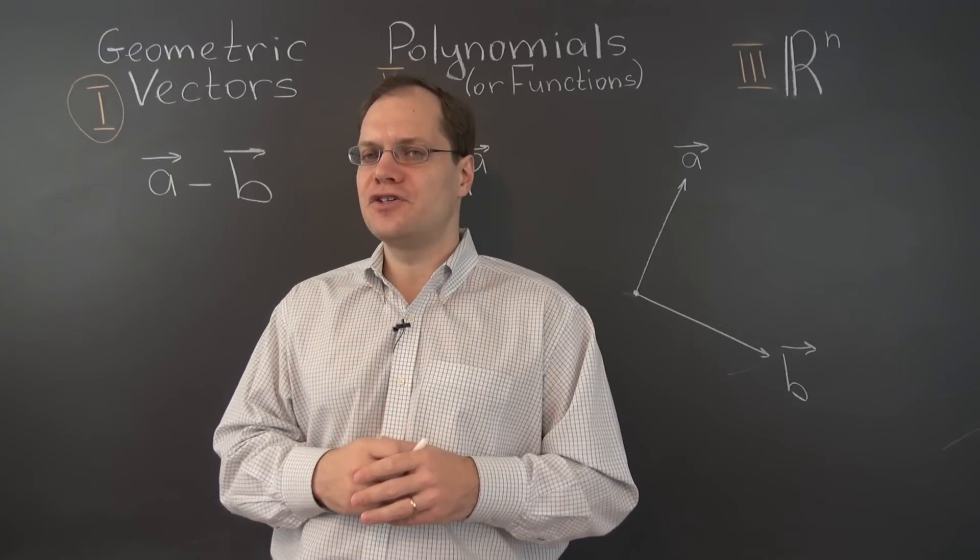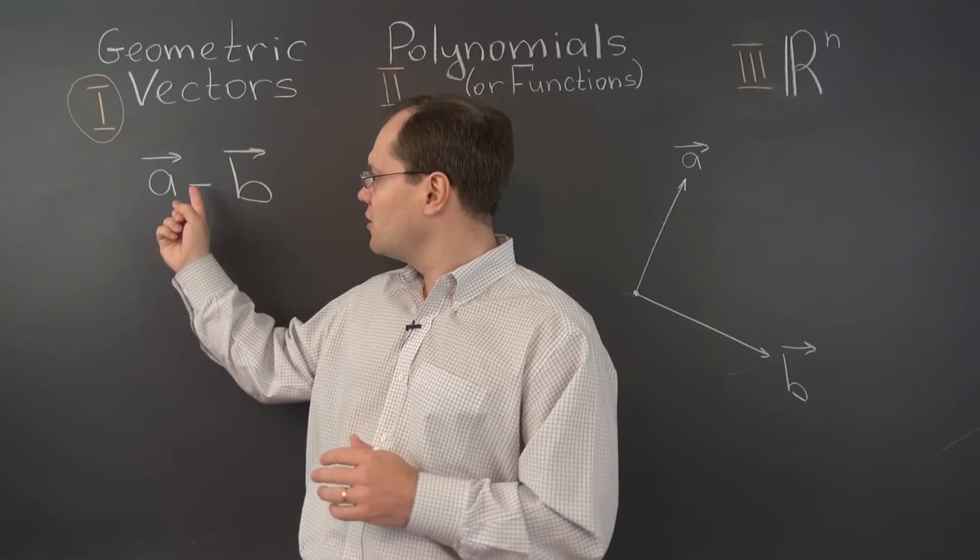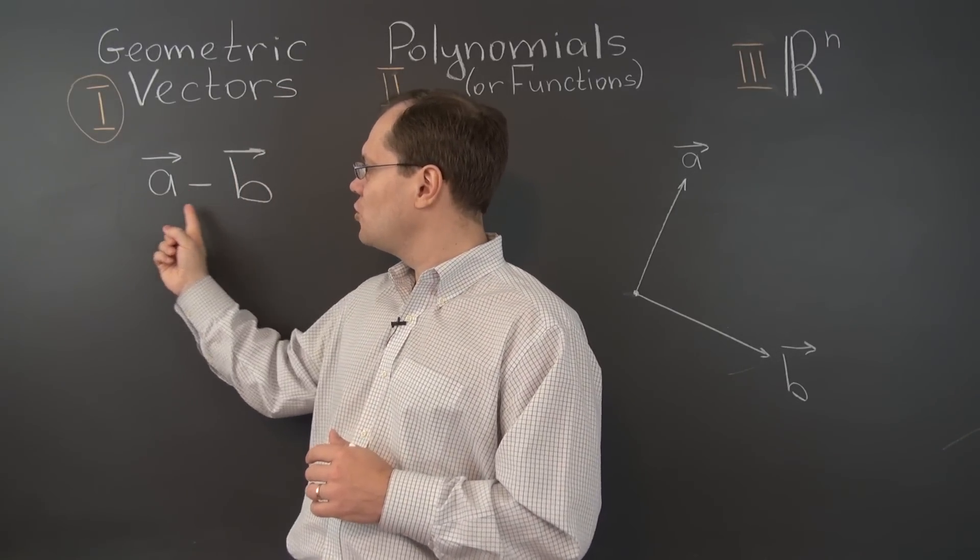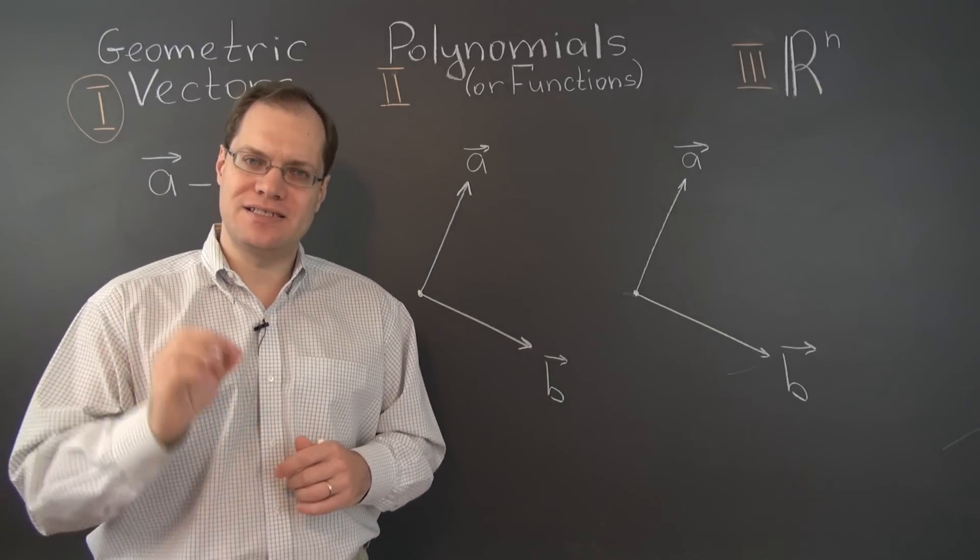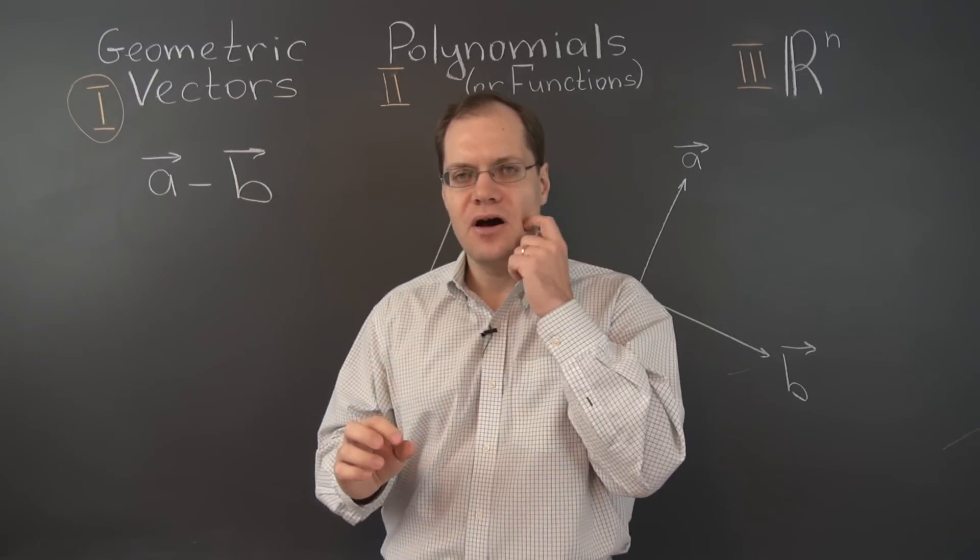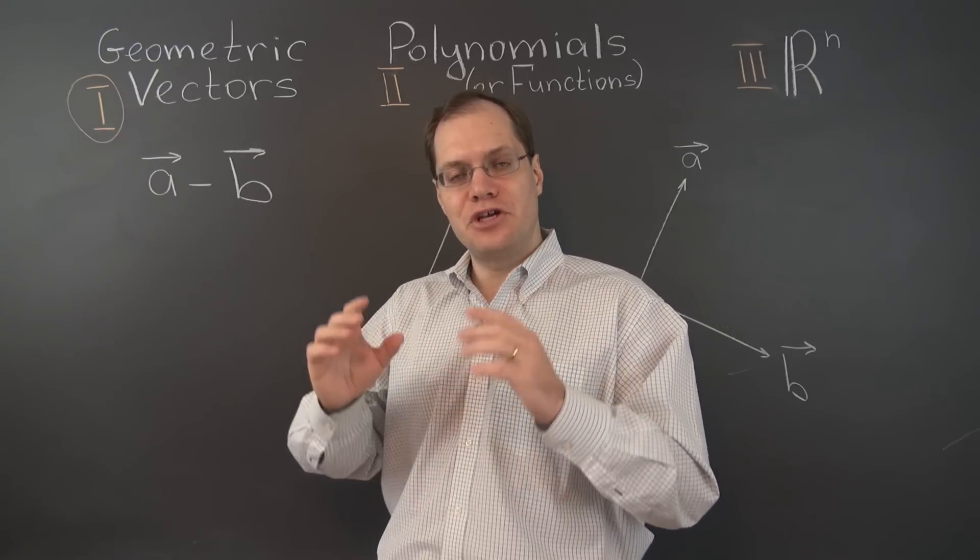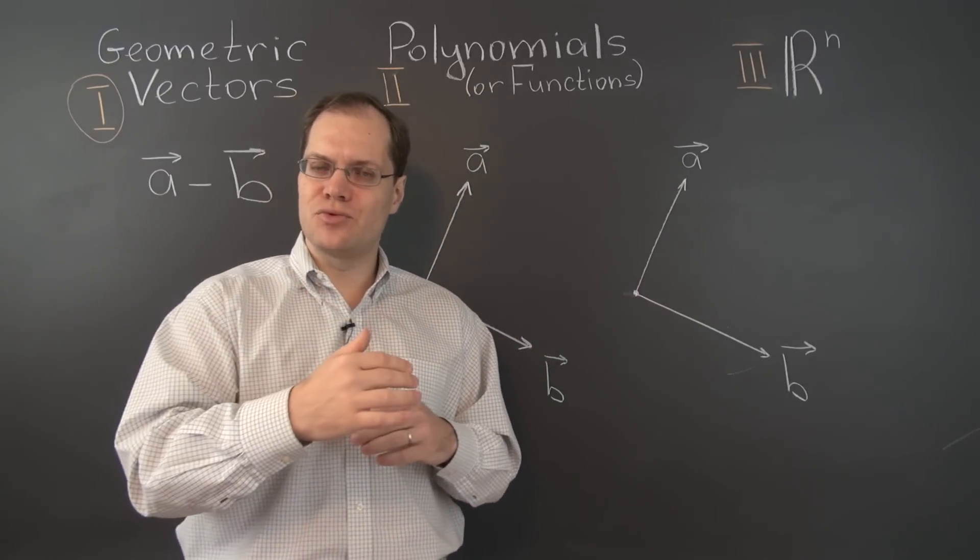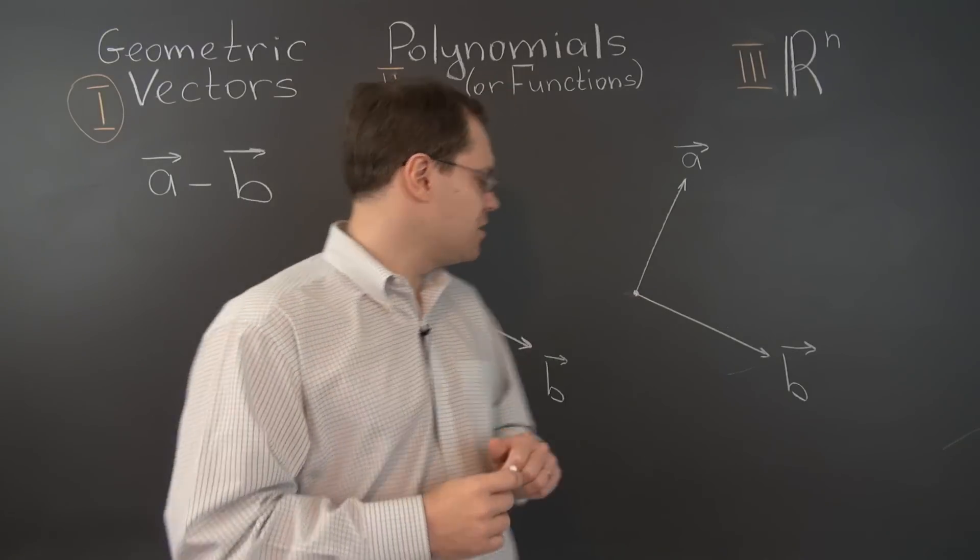Here is the first approach. You can think of A minus B as adding the vector minus B to the vector A. So we're interpreting A minus B, the difference, as the sum of the vectors A and minus B. And we can do that sum either by the tip-to-tail rule or by the parallelogram rule. Let's use the tip-to-tail rule.